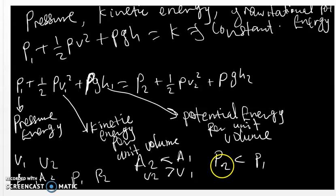This is what we mean when we explain Bernoulli Principle. You will understand this more when we dive into computation. Now, if we want to derive the equation of Bernoulli Principle, we must first look at the assumptions. The first assumption of Bernoulli is that the density of the incompressible fluid remains constant at both points.